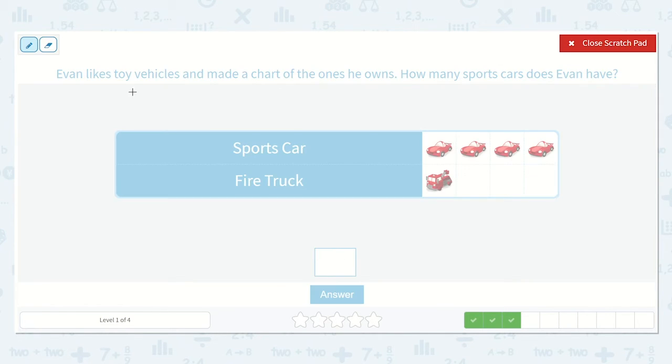This one tells us that Evan likes toy vehicles and made a chart of the ones he owns. How many sports cars does Evan have? Well, again, it's okay if we don't know how to read that whole word. We know what letters they start with. S. This one doesn't start with S. This one starts with F. This one is fire truck. So this one, sports car, matches this.